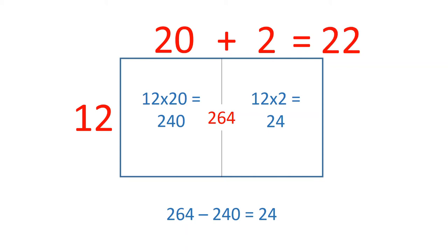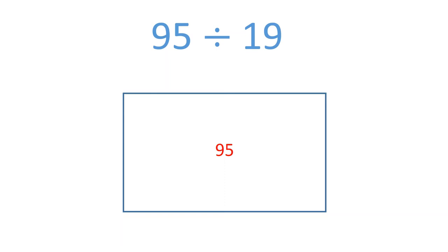Here's another example. Let's take 95 divided by 19. The total area is 95 and the width is 19. I'll divide the length in 2.